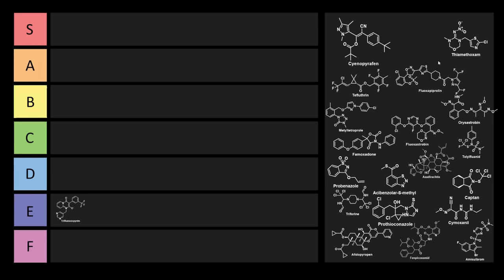Cyanopyraphen was formerly used for the control of mites in fruits, vegetables, and teas. So this one's got a little bit more drip. I think we could probably put this one into at least a D tier. So it's not too bad overall.